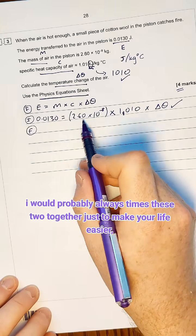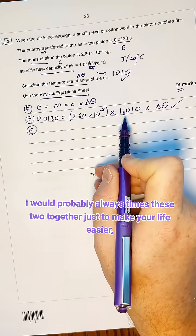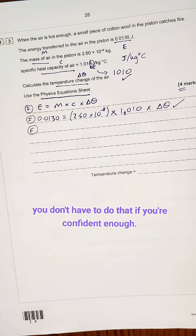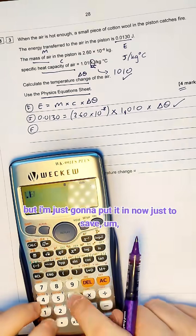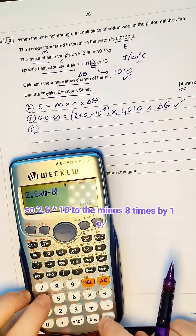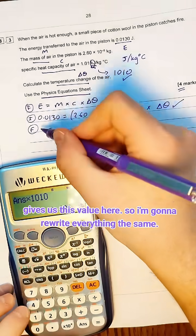Next is the fine-tuning element. I would probably always times these two together just to make your life easier, to make it look a bit neater. You don't have to do that if you're confident enough. I'm just going to put it in now just to save messing it up a bit later. So 2.6 times 10 to the minus 2 times 1,010 gives us this value here.